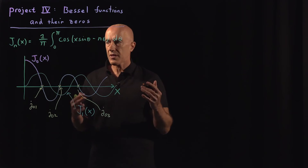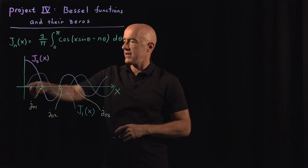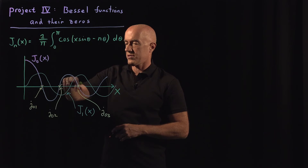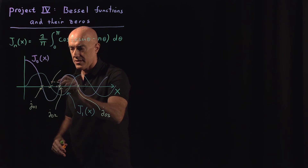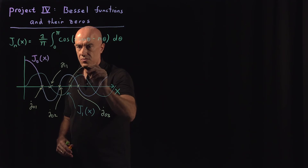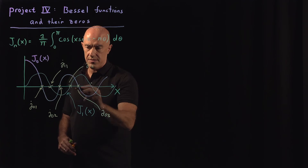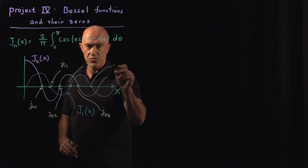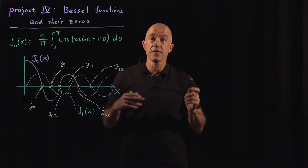On the other hand, if you plot J₁(x) — putting n equals one — it starts at zero, then crosses the x-axis, crosses the x-axis again, et cetera. The first crossing I will call j_{1,1}, corresponding to n equals one, first zero. The second crossing will be j_{1,2}, and then j_{1,3}, and so on.